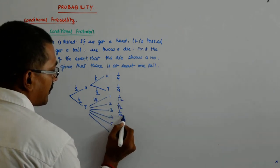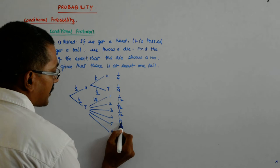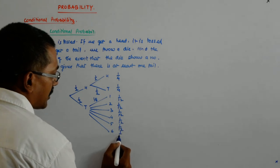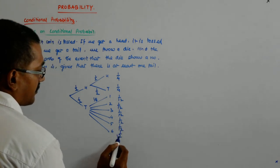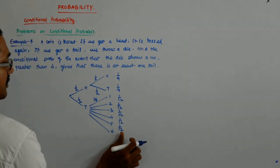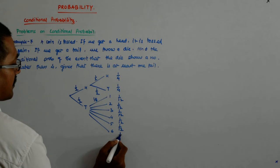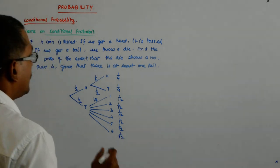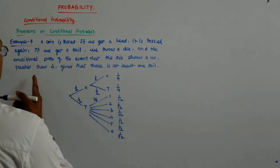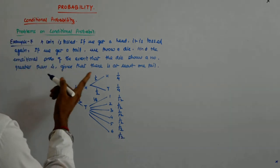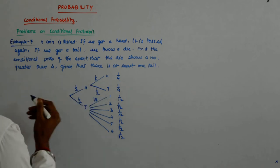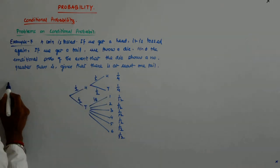All of them become 1 by 12, 1 by 12, 1 by 12 and 1 by 12, right? Now, we know the sample space.